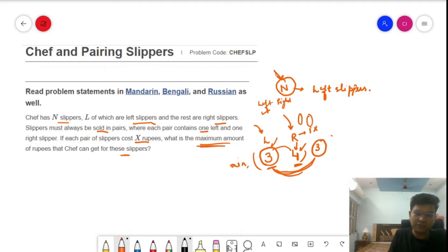So minimum of left and N minus left, because left plus right forms N. If we want to calculate right, it will be N minus L. So minimum of these two values will give us how many pairs are available to us, and multiplying with the value that is X rupees, which is the cost of one pair of slippers, we will get the final answer.